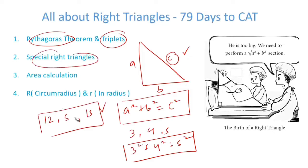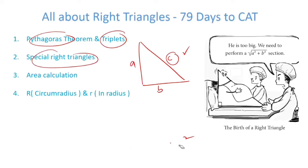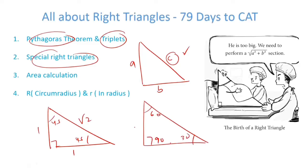Special right triangles. There are certain triangles which have a defined ratio of the sides. For example, a triangle like this: 90, 45 and 45 is an isosceles right triangle. So the sides will be in the ratio 1 is to 1 is to root 2. Another important triangle to remember is a 30, 60, 90 triangle wherein the sides are in the ratio 1 is to root 3 is to 2.